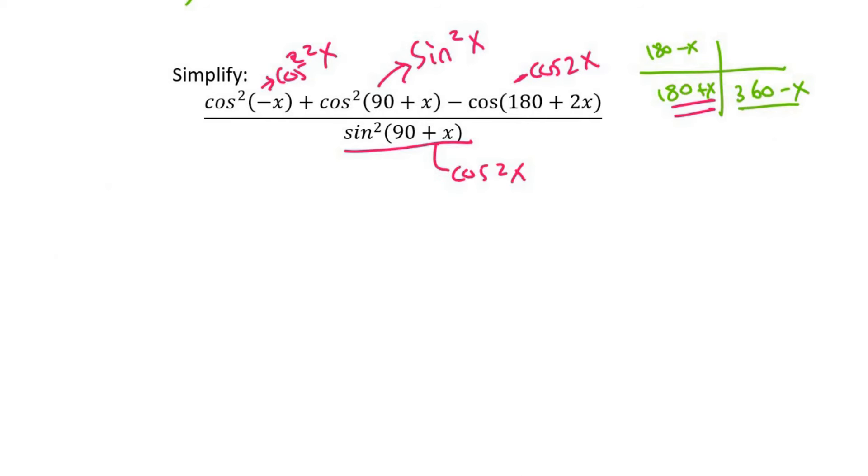So now we can proceed to go and write everything. So it would be cos squared x plus sin squared x minus. And then this is also a negative. So that's going to be two negatives next to each other. Over. Oh no, we said that that's going to become cos squared x. Cos squared x.